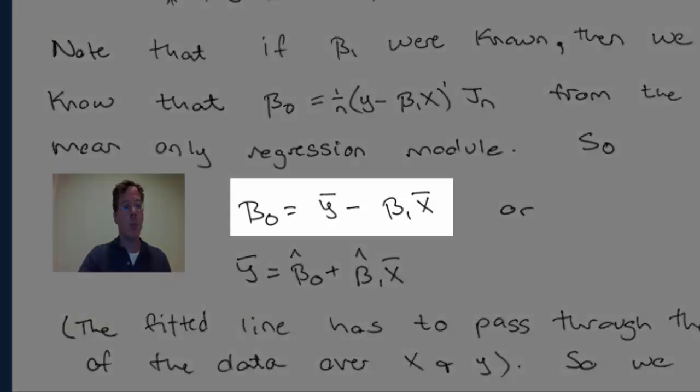This yields the equation beta 0 equals y-bar minus beta 1-x-bar. So whatever the solution for beta 0 and beta 1 are to the least squares criteria, they have to go through this point, beta 0 equal y-bar minus beta 1-x-bar.